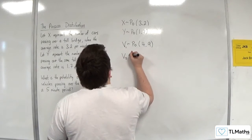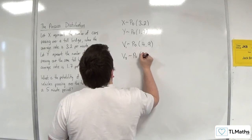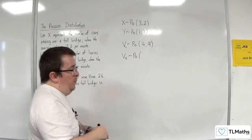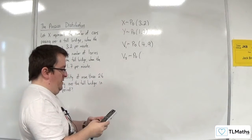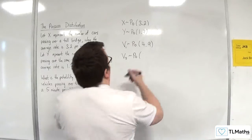Then V5, a 5-minute period, would be 4.9 times 5. So 4.9 times 5 is 24.5.